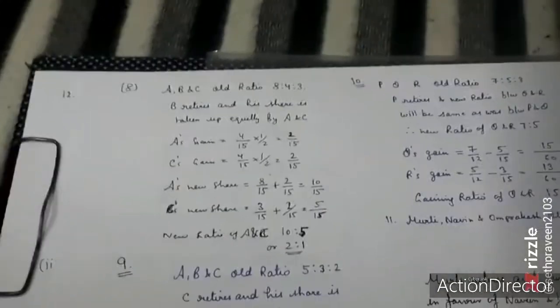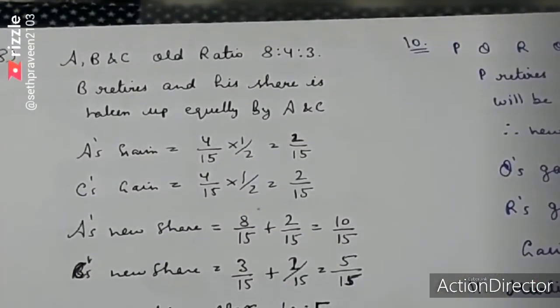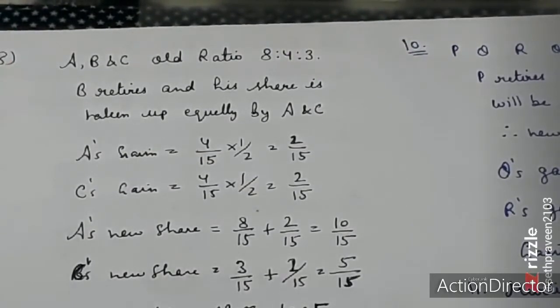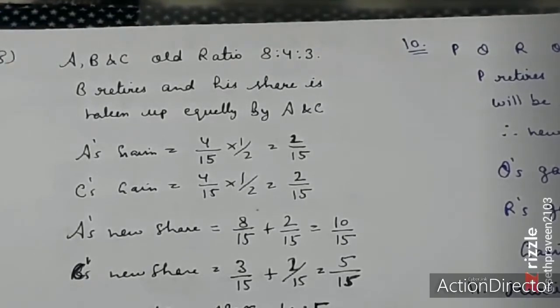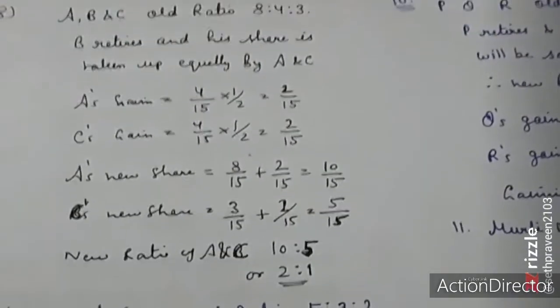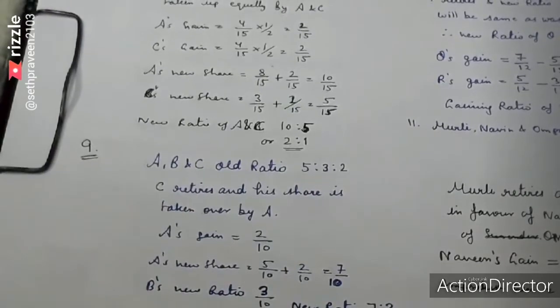This question becomes complete. Let's talk about question number 8. ABC's ratio is 8 to 4 to 3. B is retired and his share is acquired by A and C in the ratio 4 to 3. B's share is 4 by 15. A gains 4 by 15 times 4 by 7, and C gains proportionally. The new shares are calculated.